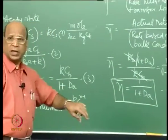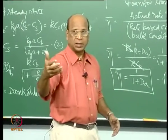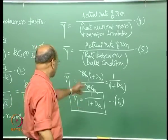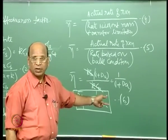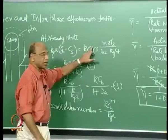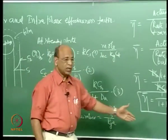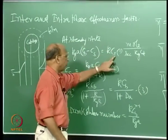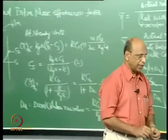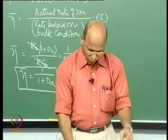So I think we have to stop here. I will give you an assignment exercise: for second-order reaction (rate proportional to C_S²) and half-order reaction, follow the same procedure — solve for C_S from the steady-state balance and derive the effectiveness factor. These will be the exercises you have to do.